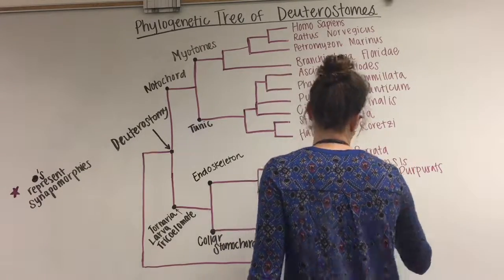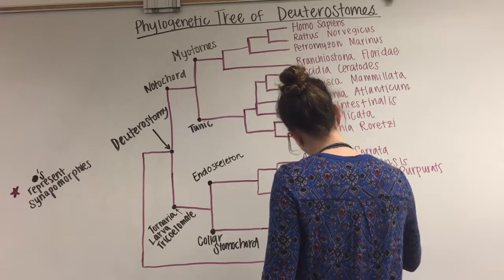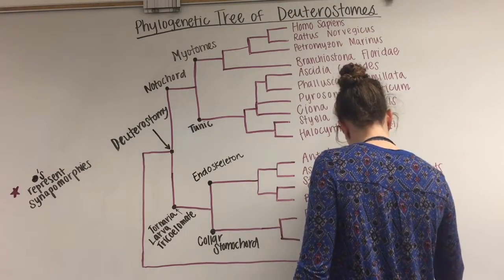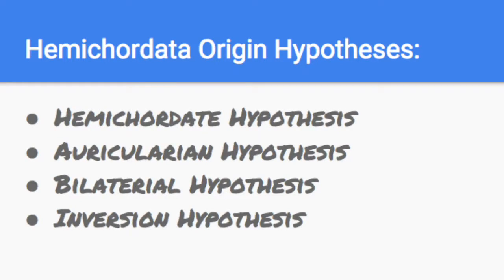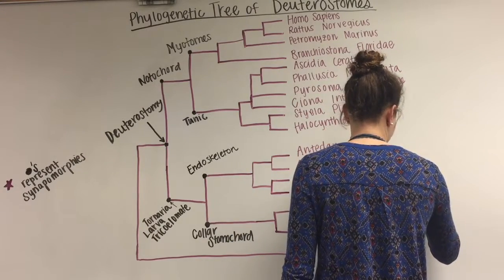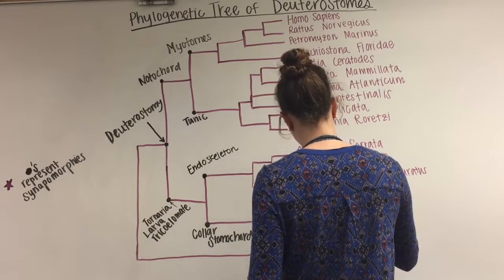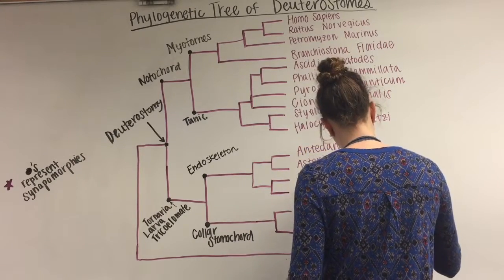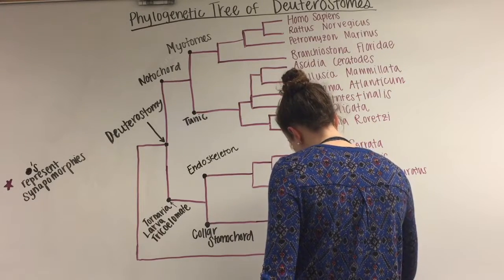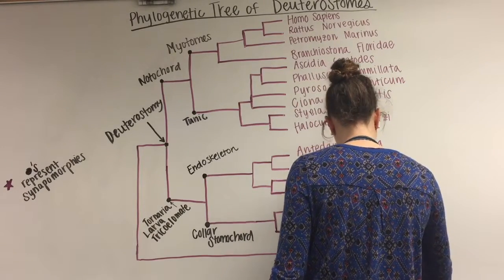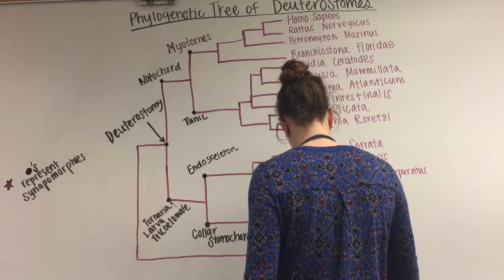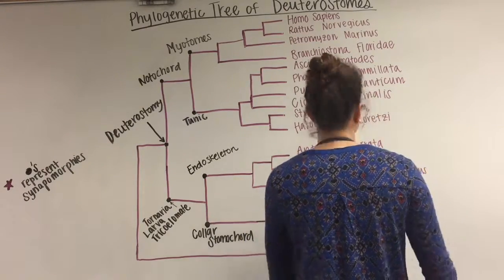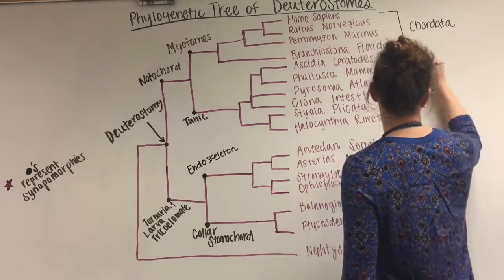Fossil records predict that these deuterostomes are around 500 million years old. Four hypotheses exist concerning their origin. The hemichordate hypothesis developed by Bateson suggests hemichordates evolved through an exaggeration of structures in a common ancestor that already contained the dorsal central nervous system. The auricularian hypothesis states that the ancestor was a ciliated larva resembling a pterobranch, where the cilia eventually internalized to form a new central nerve cord. The bilateral ancestor hypothesis states that chordates originated from a complex bilateral protostome animal. Finally, the inversion hypothesis suggests that an early protostome ancestor inverted its body and evolved a mouth, making chordate anatomy the inverse of protostomes.